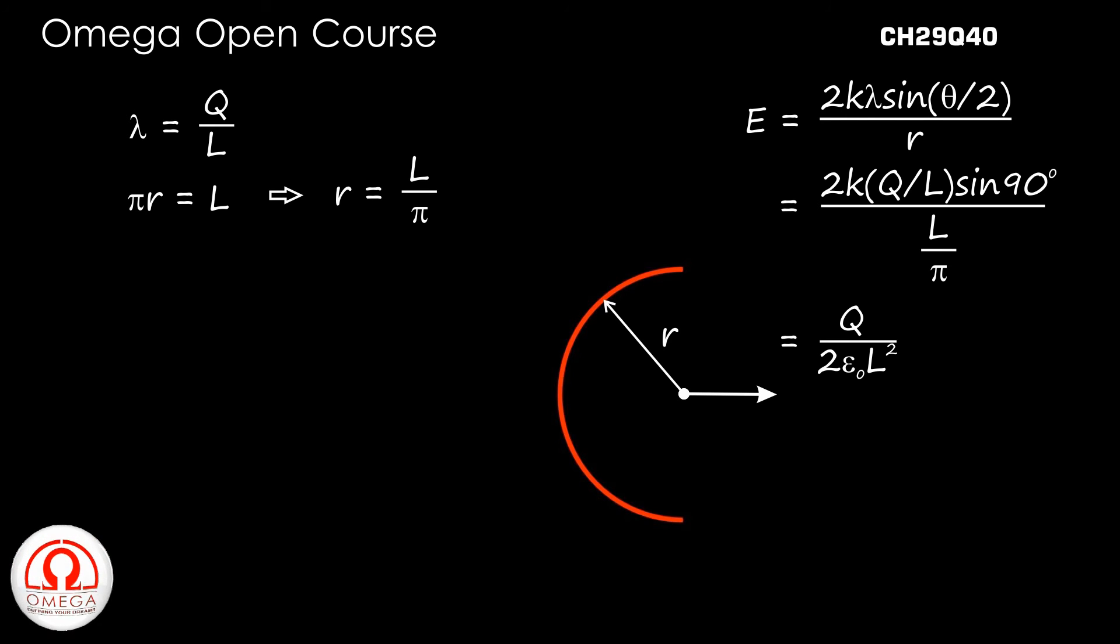Putting k is equal to 1 by 4 pi epsilon not, we get E is equal to Q by 2 pi epsilon not L square. This is our answer.